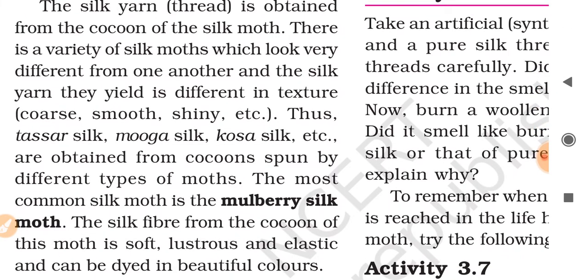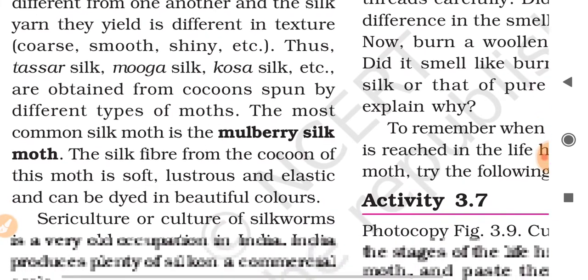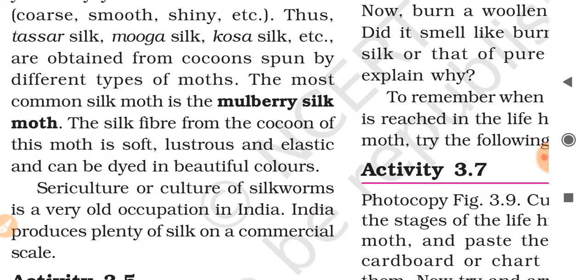Tassar silk, Muga silk, and Kosa silk are obtained from cocoons spun by different types of moths. The most common silk moth is the mulberry silk moth, most commonly used to make silk. The silk fiber from the cocoon of this moth is soft, lustrous, and elastic, and can be dyed in beautiful colors.